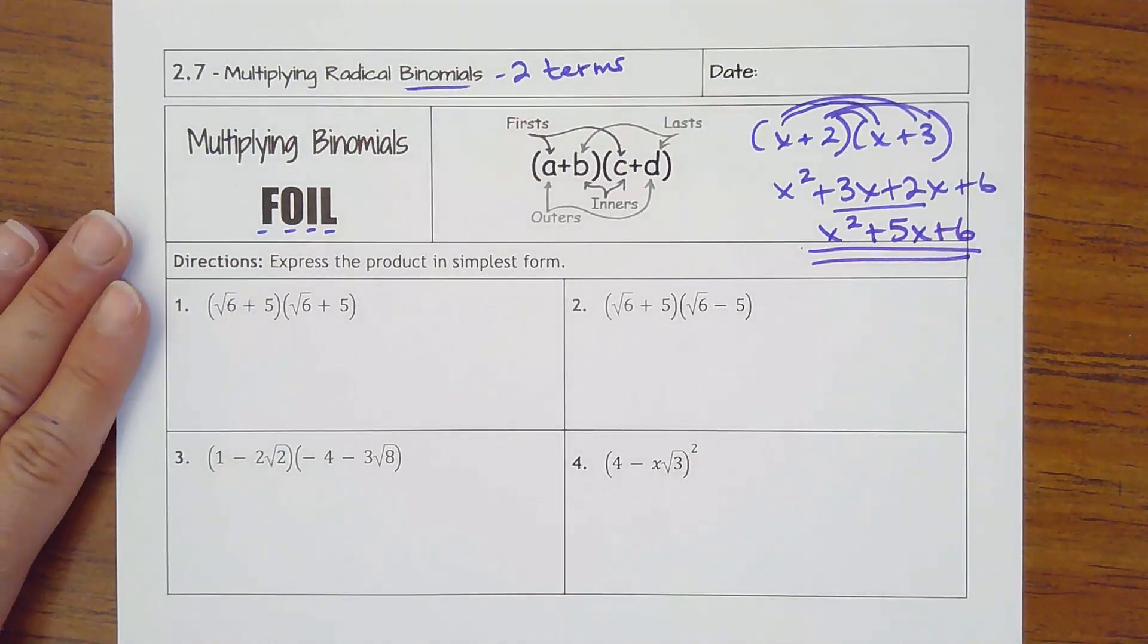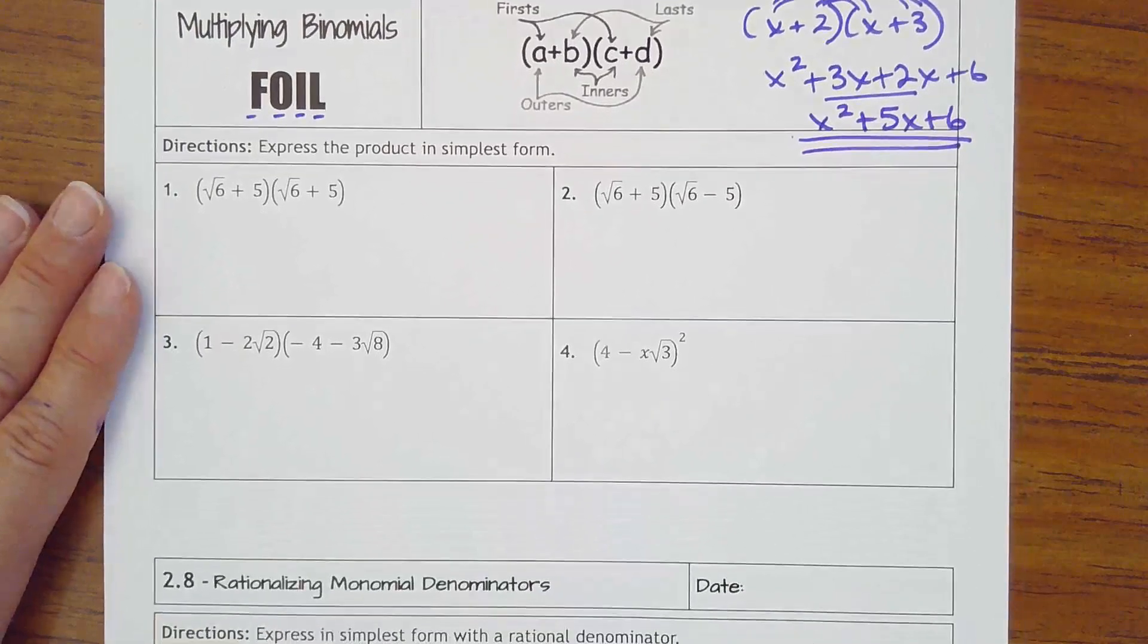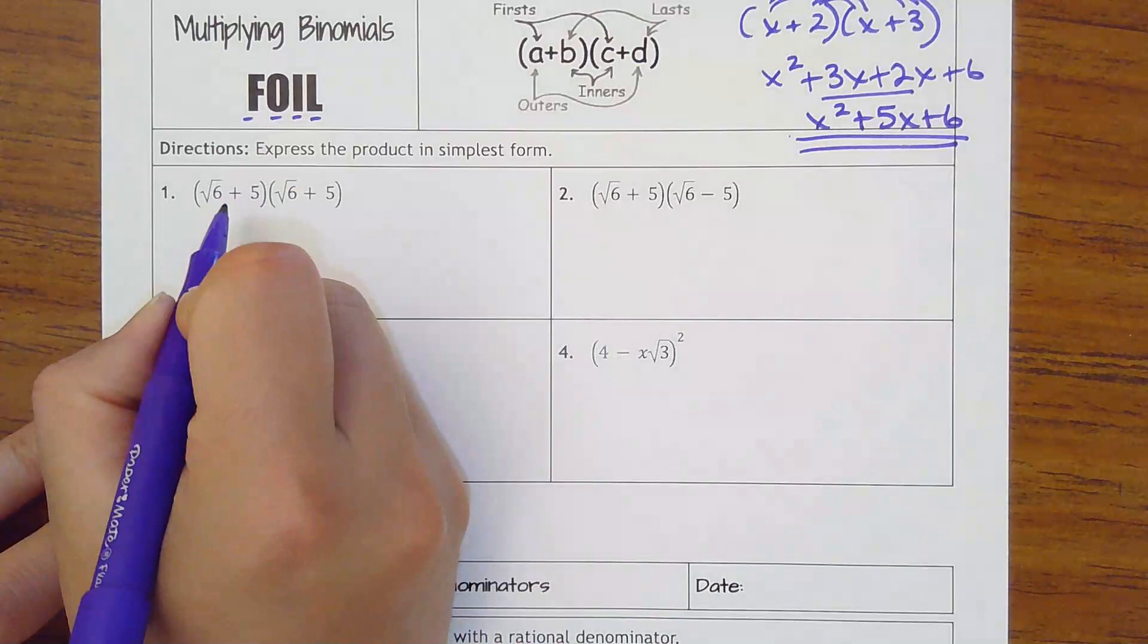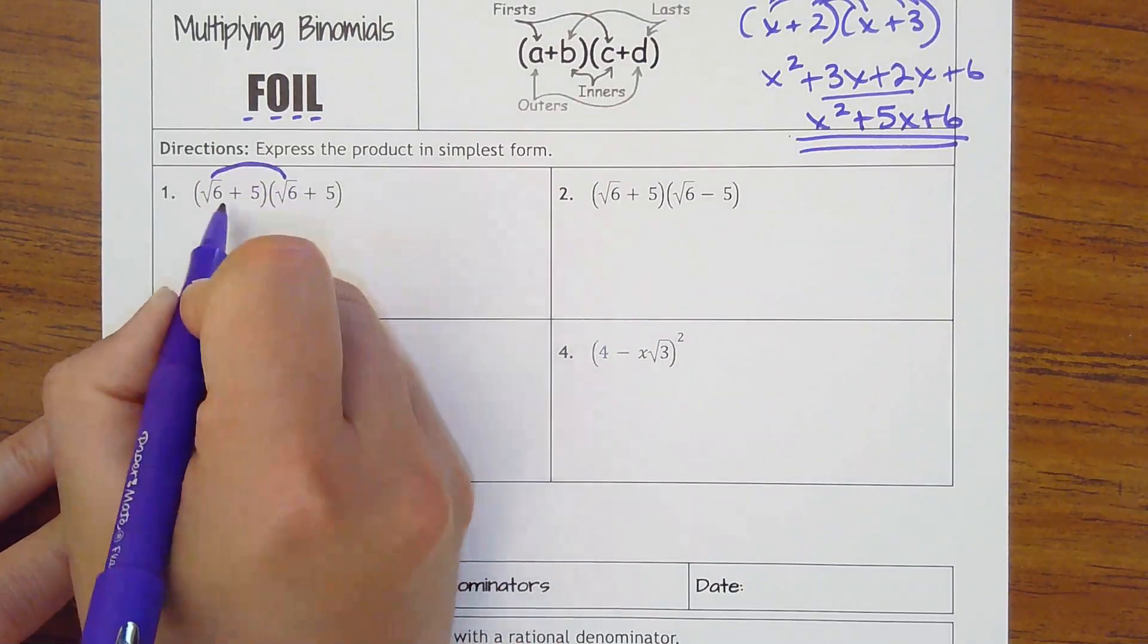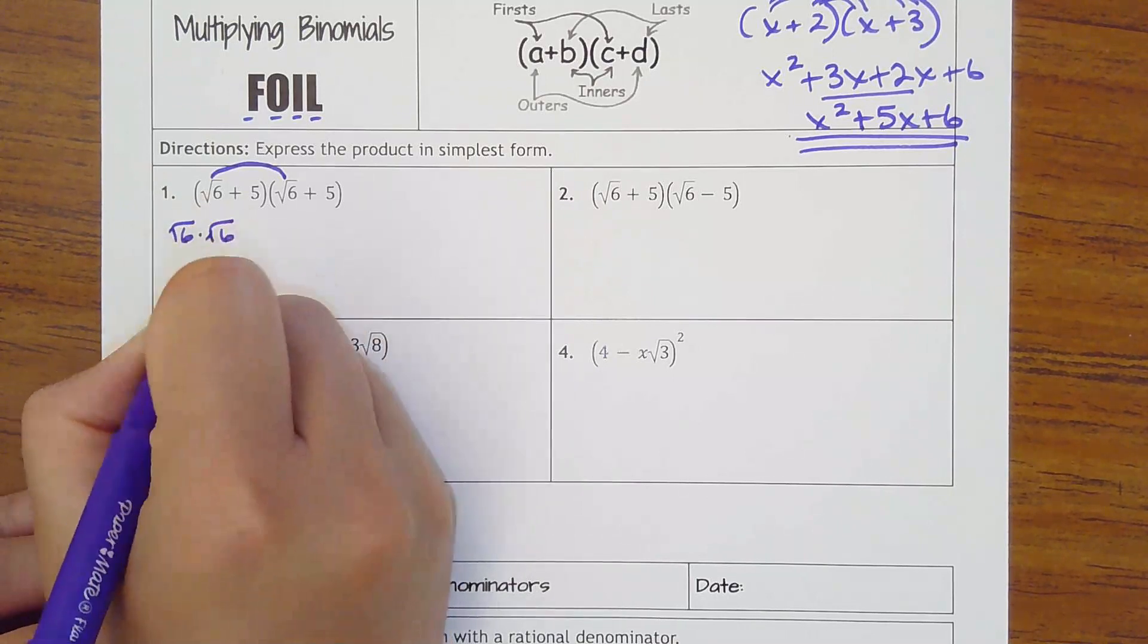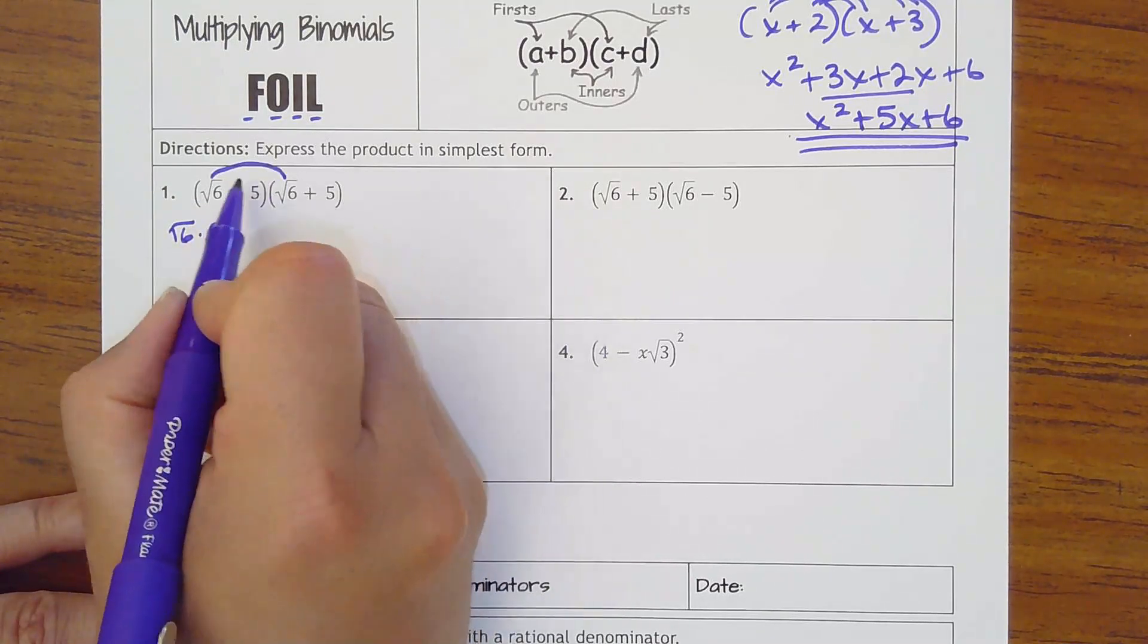That's what we're doing, but we're doing them with radicals. This is to express the product in simplest form. So we want to take first times first, square root of 6 times square root of 6.